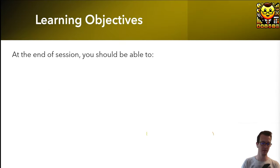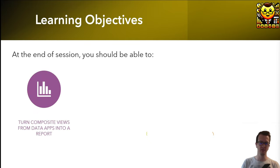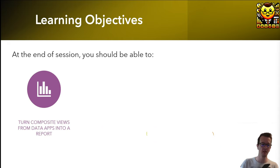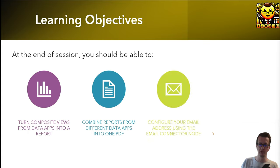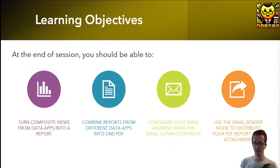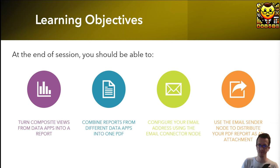At the end of this session you will know how to turn your existing data apps that have composite views into static reporting pages, and how to combine them into one report that can be saved as a PDF, HTML, or image. You will also learn how to use the email processing extension — the email connector node — to establish a connection to your own email address, and using that connection and the report, generate an email with the report attached as an image or PDF and send it to a group of stakeholders, all automatically with the click of a button.